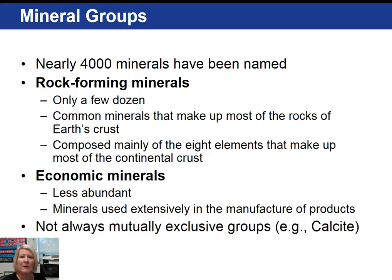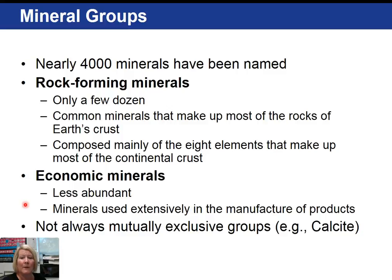Let's talk about some various mineral groups. There are nearly 4,000 minerals that have been named. Fortunately, only a few dozen are seen consistently in our rocks, and we refer to these as the rock-forming minerals. These common minerals make up most of the rocks in the Earth's crust and are composed of primarily eight elements that are also the dominant elements in the Earth's crust. Economic minerals are less abundant but very important for economic reasons — these are minerals used extensively in the manufacture of products.